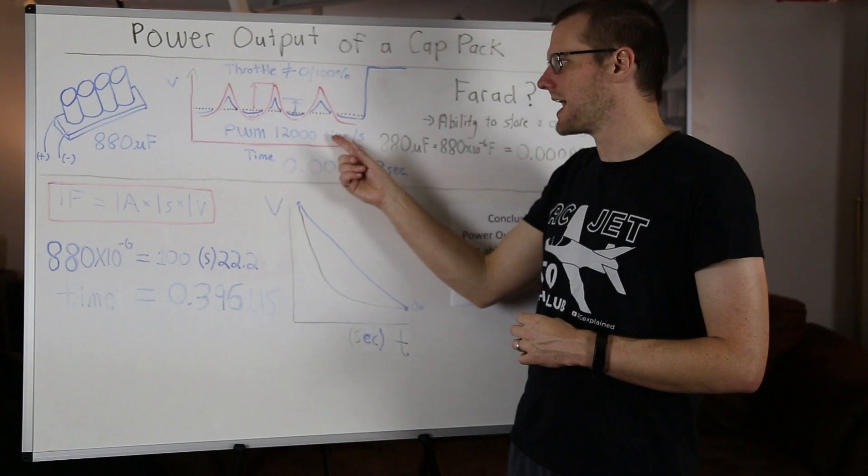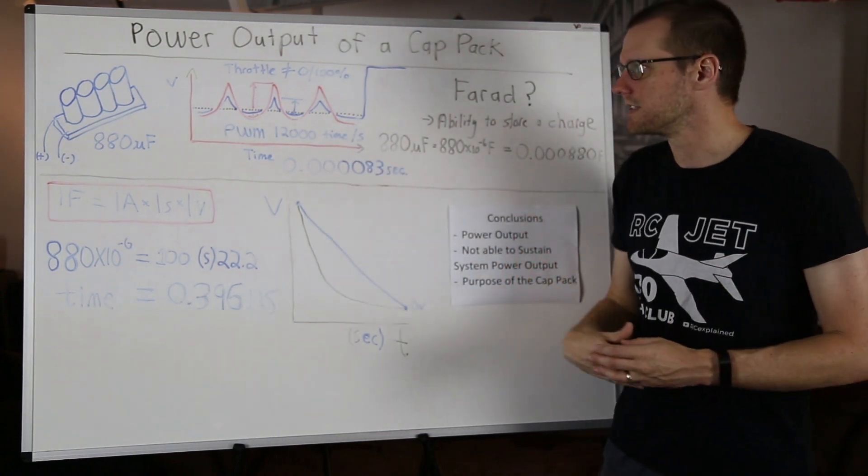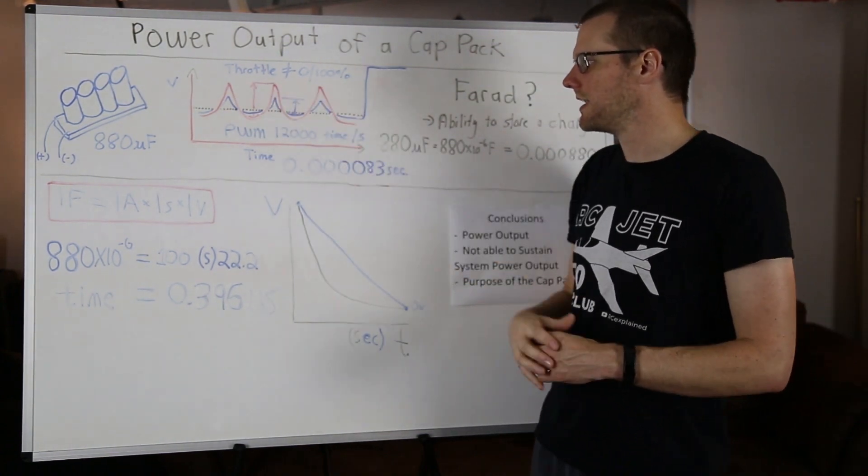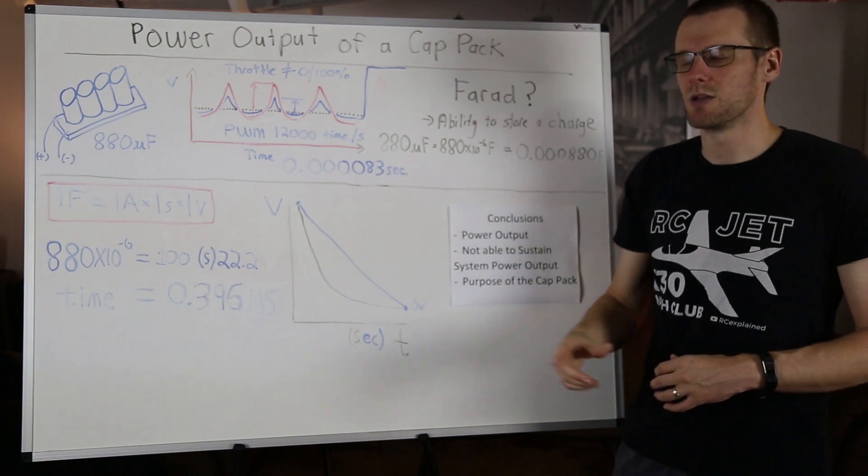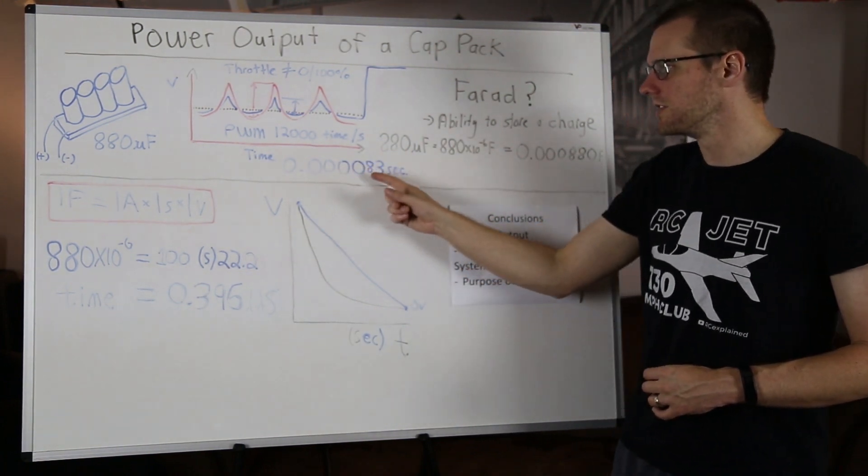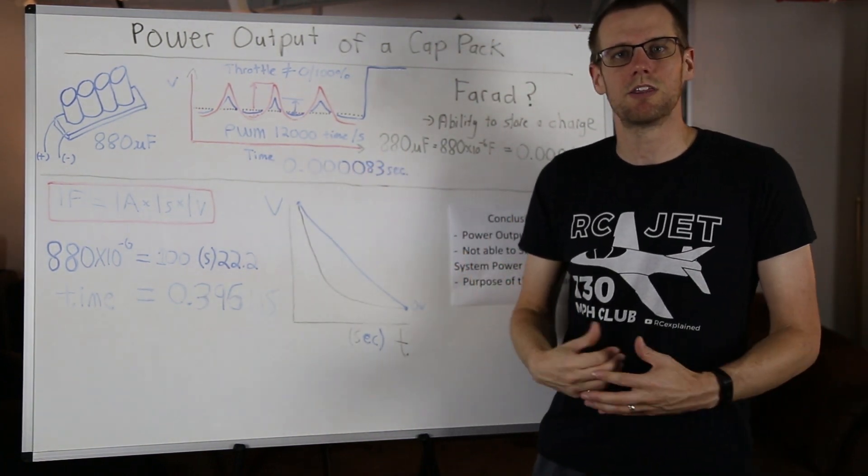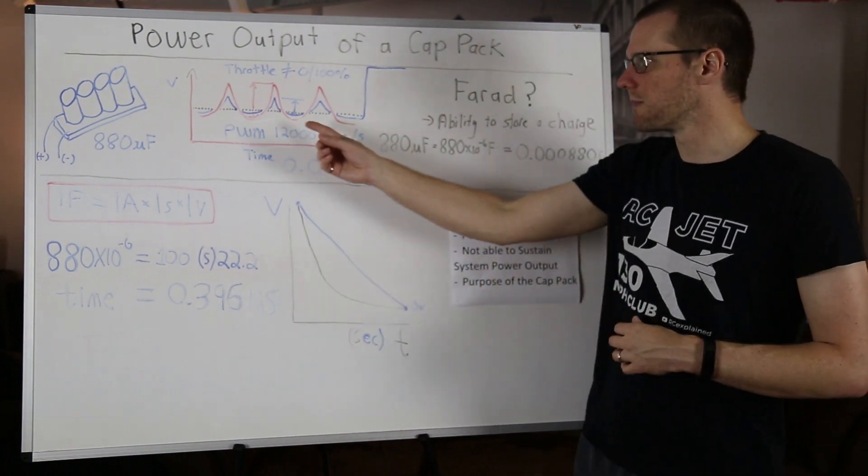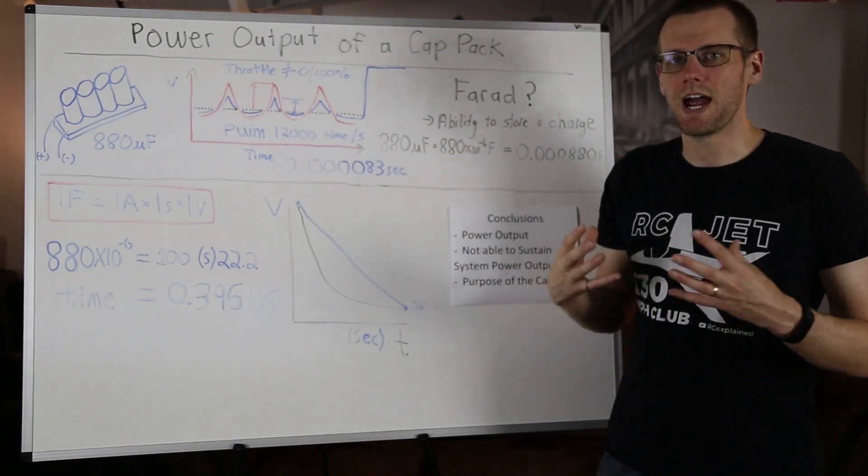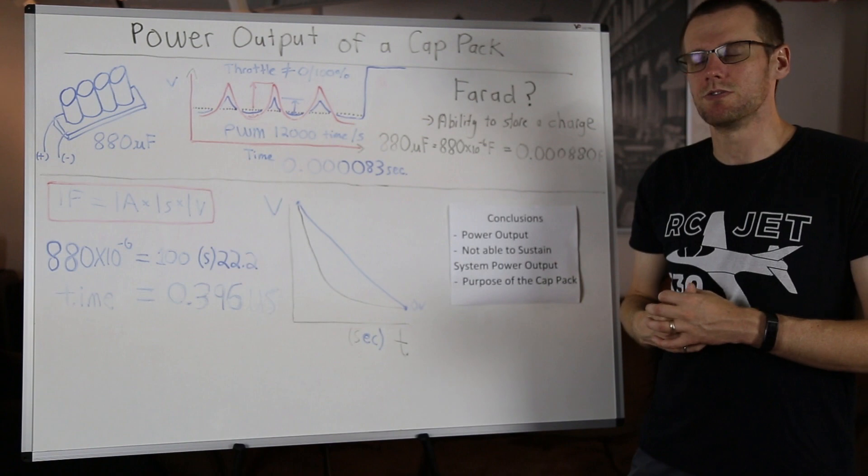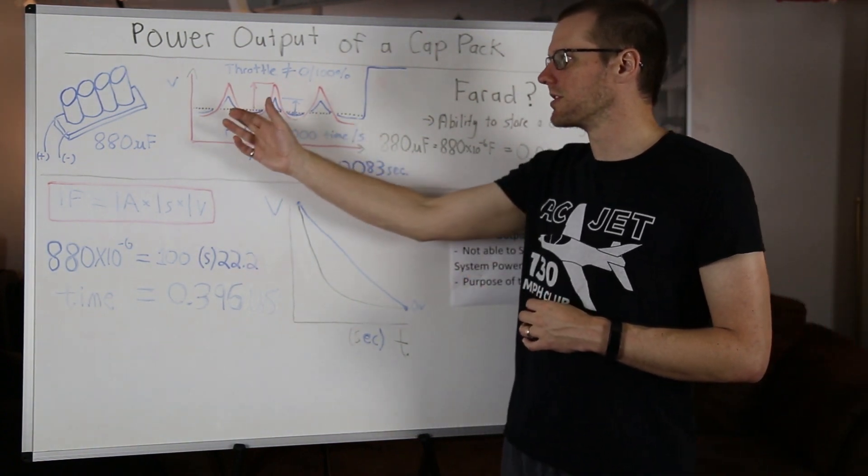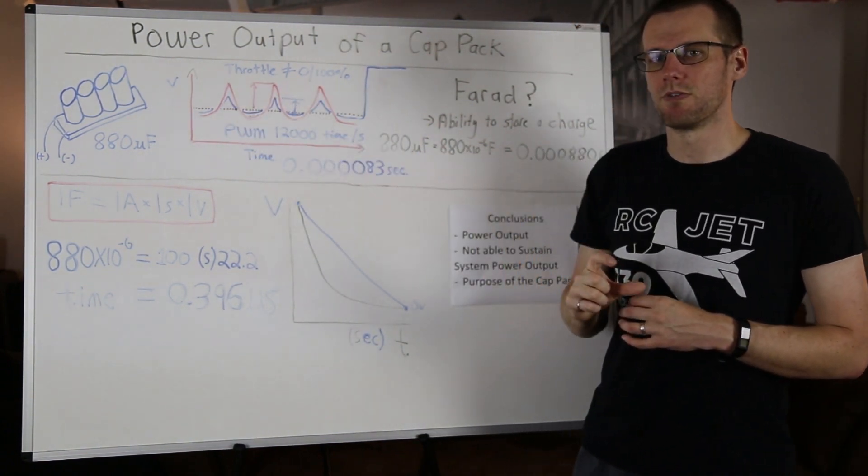Now, if you're wondering what 12,000 times per second actually represents, the difference between one peak to the next is 0.000083 seconds or 83 microseconds. The black dotted line represents the average voltage that the motor is going to see. The power output of the motor is not affected by the ripple voltage.